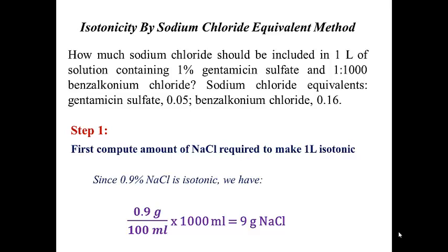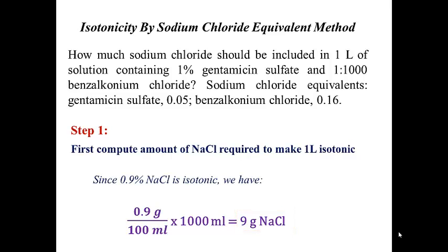Since we have 1000 milliliters (one liter), we multiply 0.9 grams per 100 milliliters by 1000 milliliters, giving us 9 grams of sodium chloride. That is how much sodium chloride we need to make one liter of purified water isotonic.